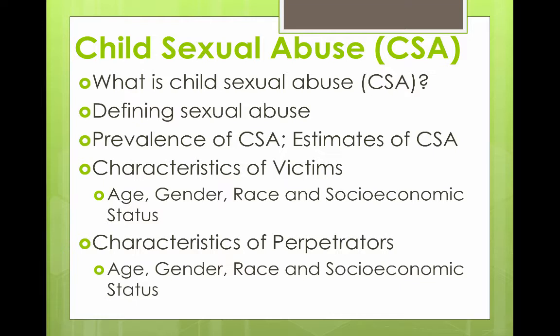The age of perpetrators is often between 30 to 40 years, but a significant number are also under the age of 18 themselves, which skews the averages. As for gender, 93 percent of reported cases involve male perpetrators, and about 7 percent involve female perpetrators — though female CSA may be more common than the data suggests due to underreporting. Racially, perpetrators are spread pretty evenly across all racial and ethnic groups.